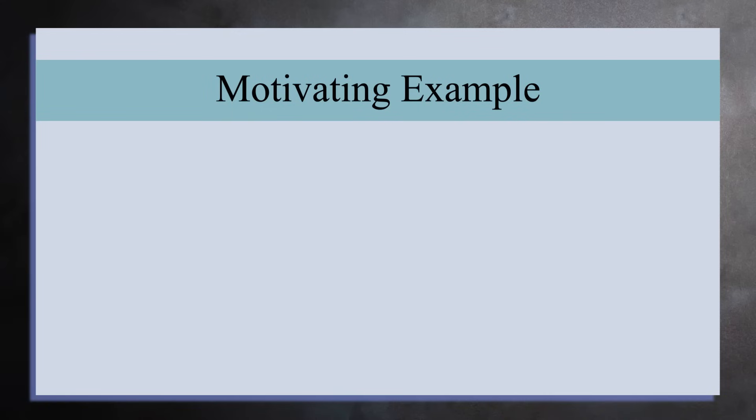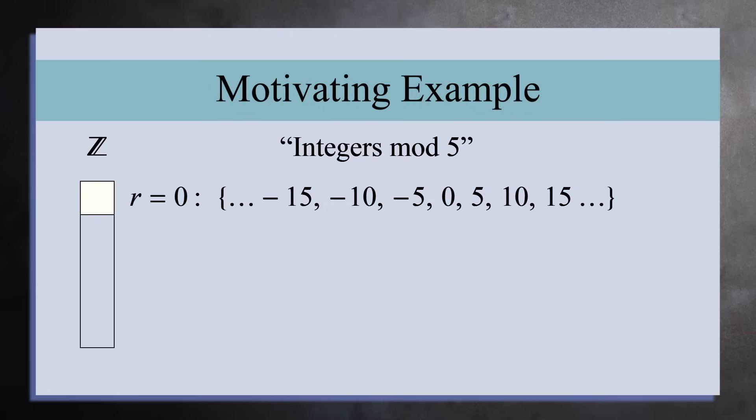To motivate the idea of a normal subgroup and a quotient group, let's first look at a concrete example, the integers mod 5. Here we will divide the integers into 5 sets, depending on the remainder you get when you divide the number by 5. The first set will be all the integers with the remainder of 0 when you divide by 5. In other words, all the multiples of 5, positive, negative, and 0.